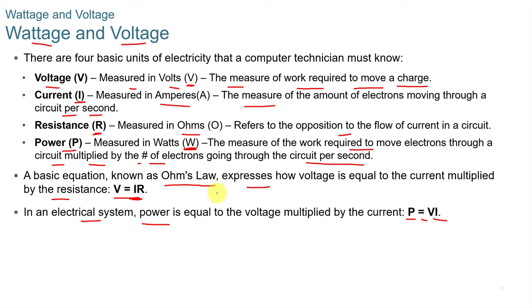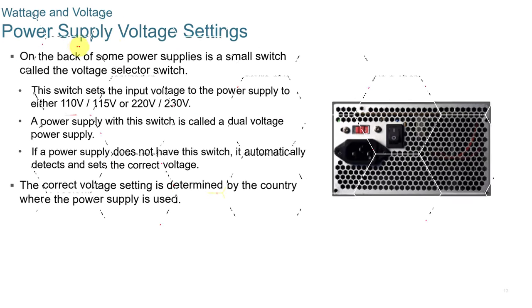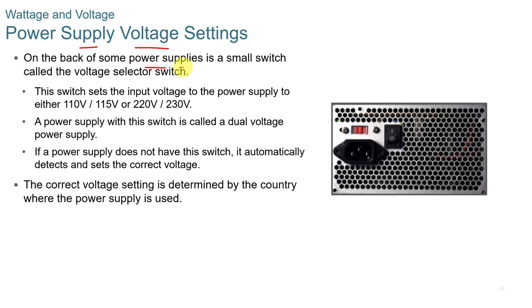You won't need to perform calculations for this course, but you do need a basic understanding of wattage, voltage, resistance, current, and Ohm's Law. On the back of some power supplies, there's a small red voltage selector switch that lets you set it to either 110/115 or 220/230 volts — called a dual voltage power supply. If the power supply doesn't have that switch, it automatically detects and sets the correct voltage. The correct setting depends on the country where the power supply is used. In the US it's usually 110/115.